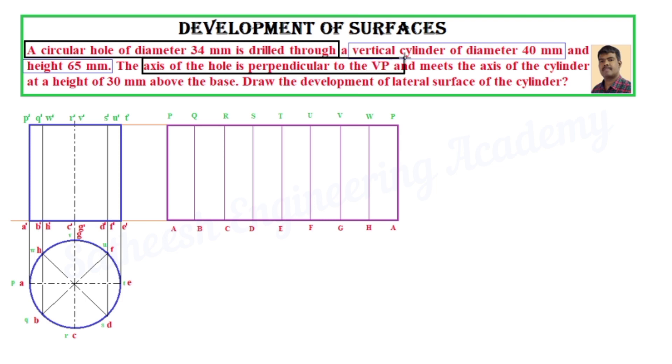A circular hole is drilled in the vertical cylinder, size 34 mm. The axis of the circular hole is perpendicular to the VP and meets the axis of the cylinder. The center is 30 mm above the base.